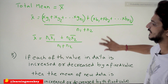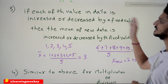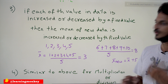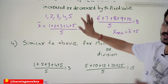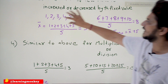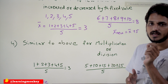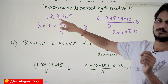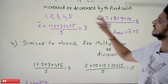Coming to the next property: if each value in the data is increased or decreased by a fixed value, then the mean of the new data is also increased or decreased by that fixed value. For example, take 1, 2, 3, 4, 5 — the mean is (1+2+3+4+5)/5 = 3. If you add or subtract a fixed value with all data points, suppose the fixed value is 5.